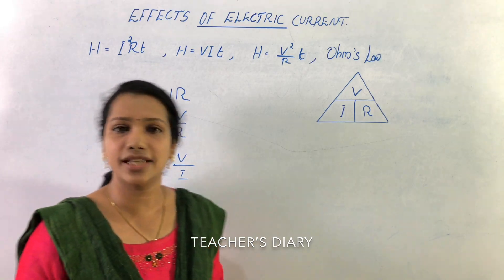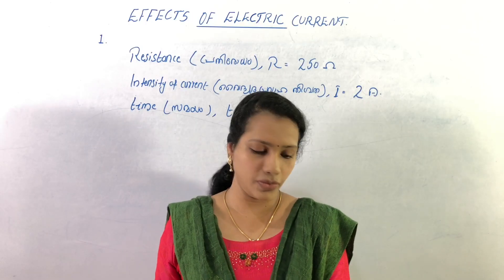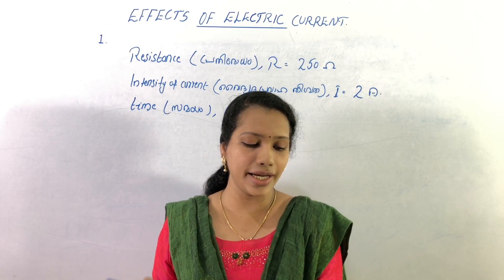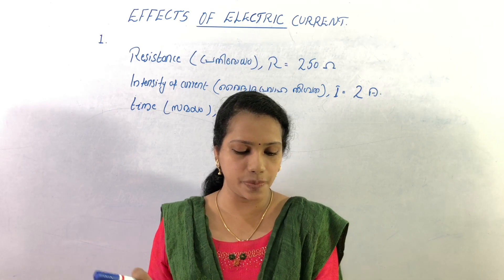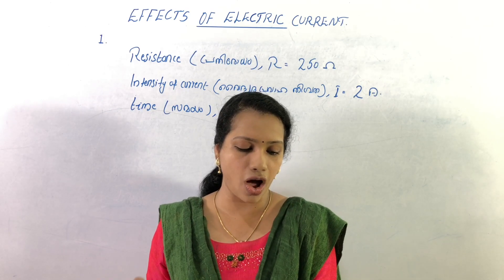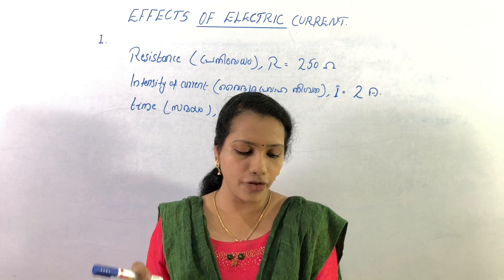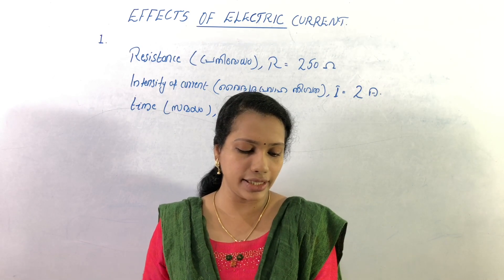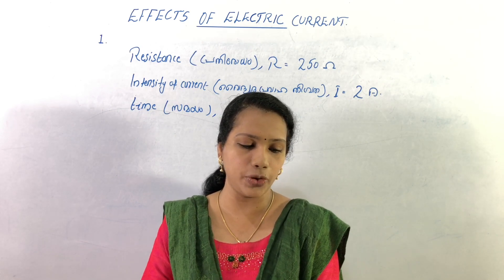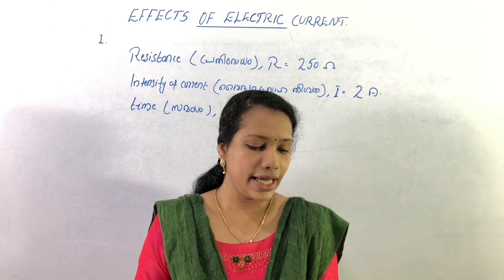Let's do examples. Question number 1: If a current of 2 amperes is passed through a resistance of 250 ohms for 5 minutes, calculate the quantity of heat produced.